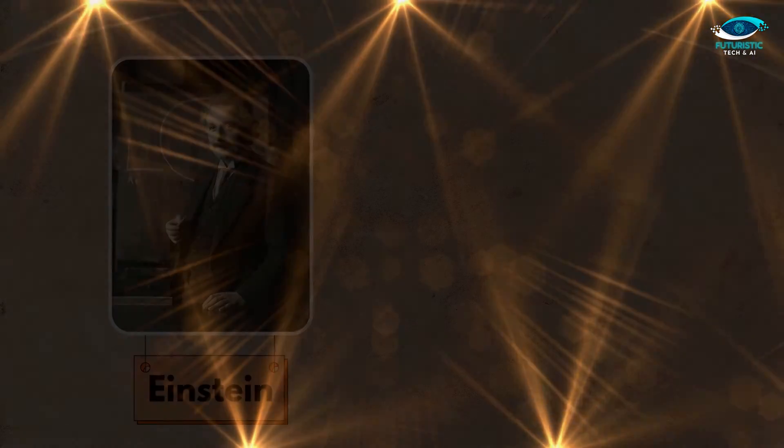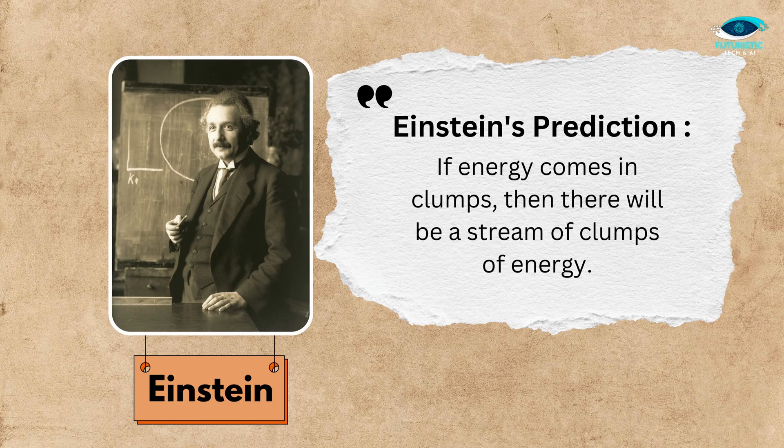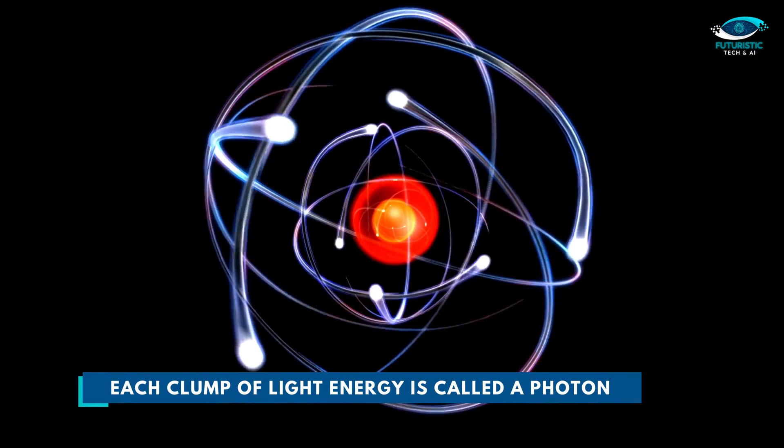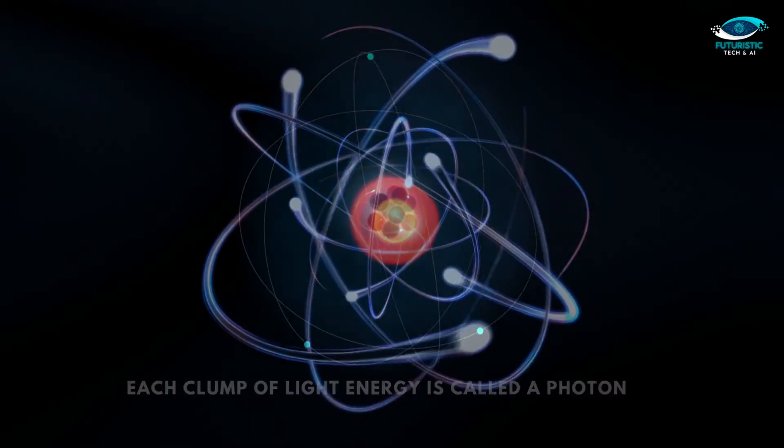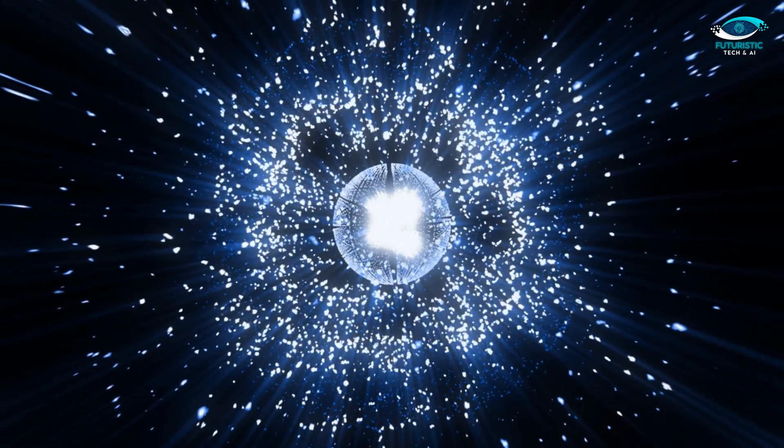So Einstein predicted if energy comes in clumps, then there will be a stream of clumps of energy. Each clump of light energy is called a photon. If a single photon has a certain frequency to eject an electron, then electrons will always be ejected after hitting with light or photons.